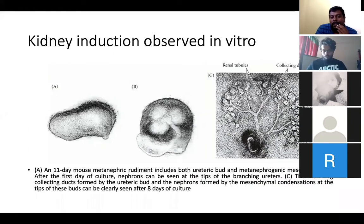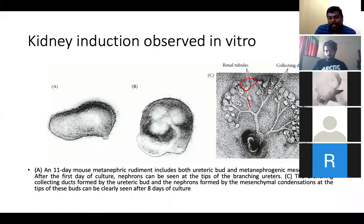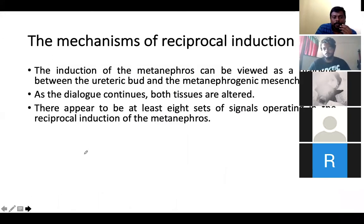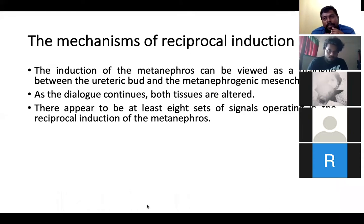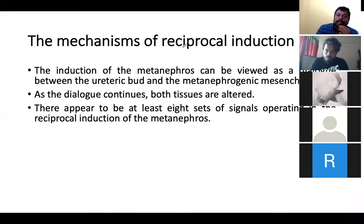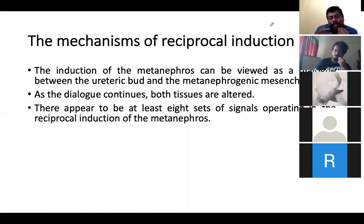You can see the formation of the ureteric bud development as well as the metanephrogenic mesenchyme forming a cellular structure. This mechanism of these two tissues interacting with each other serves as a model for understanding development — for example, heart and other organ development has been understood using this particular model.